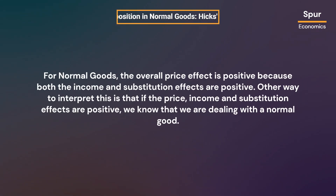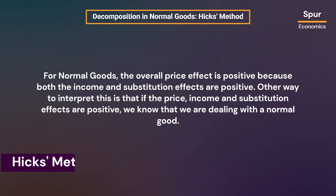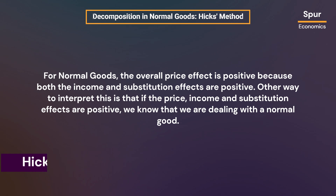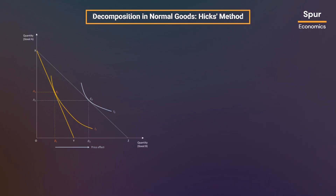For normal goods, the overall price effect is positive because both the income and substitution effects are positive. Another way to interpret this is that if the price, income, and substitution effects are all positive, we know that we are dealing with a normal good. First, we will illustrate the Hicks method of decomposing the price effect.